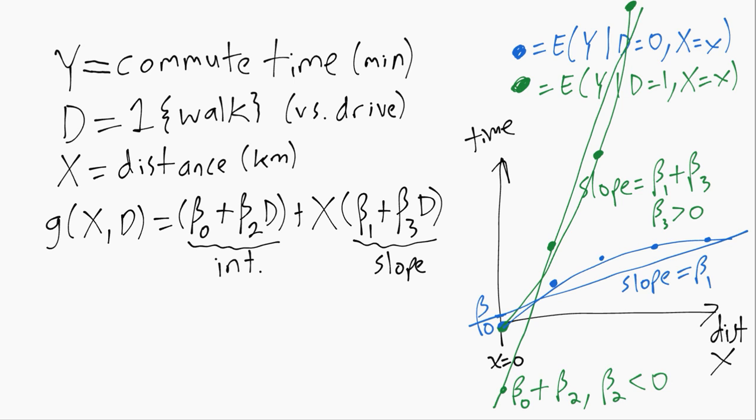So this is just trying to help us understand how having this interaction term gives us the flexibility to have not only a different intercept, but also a different slope, which allows for things like people who walk are going slower than people who drive. So often this is a very useful and realistic feature to have in the model. And hopefully this example helps walk through a concrete example of how to interpret the different parameters and how they affect the different slopes and intercepts.